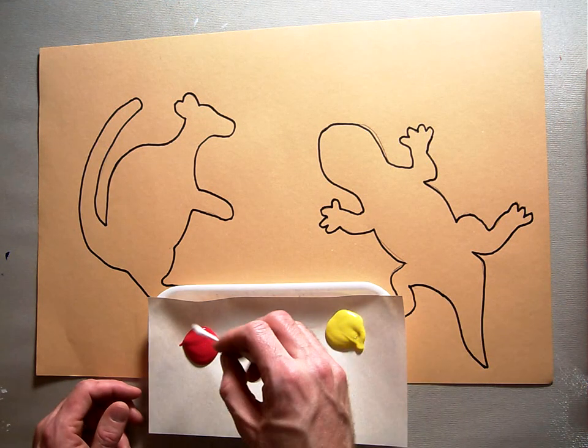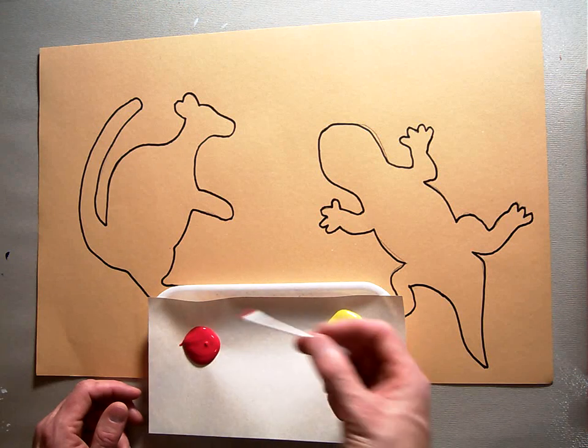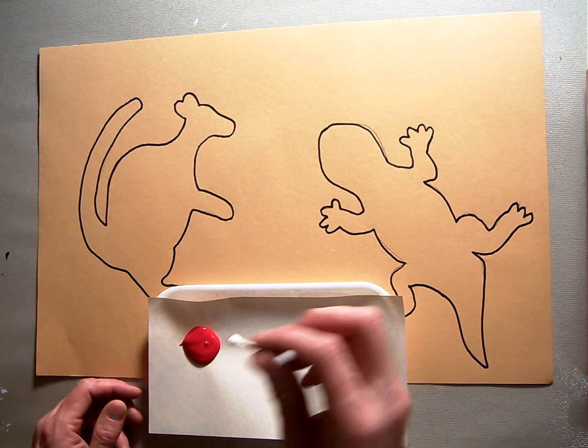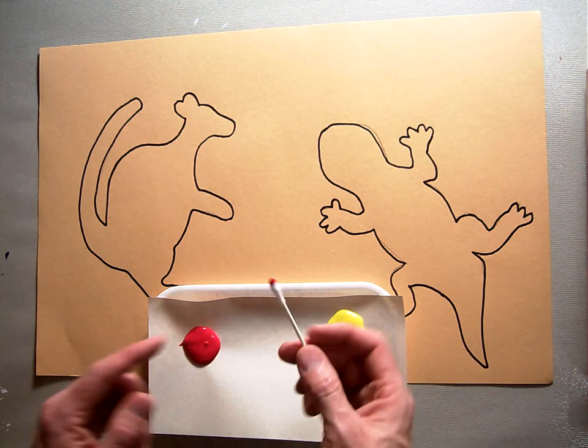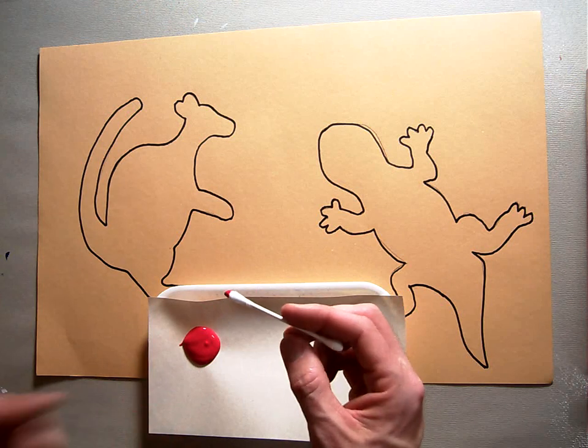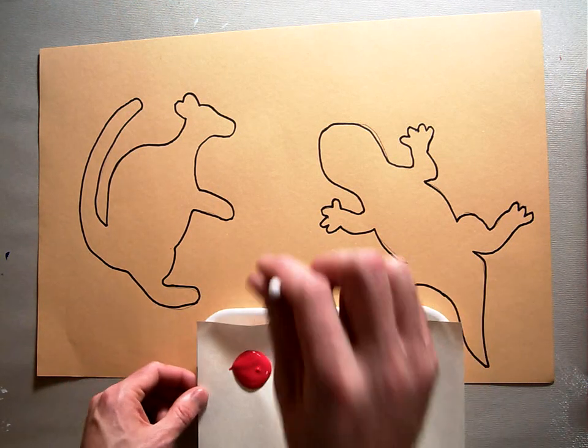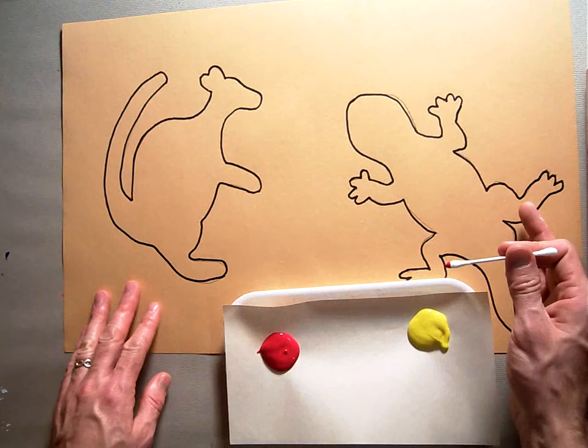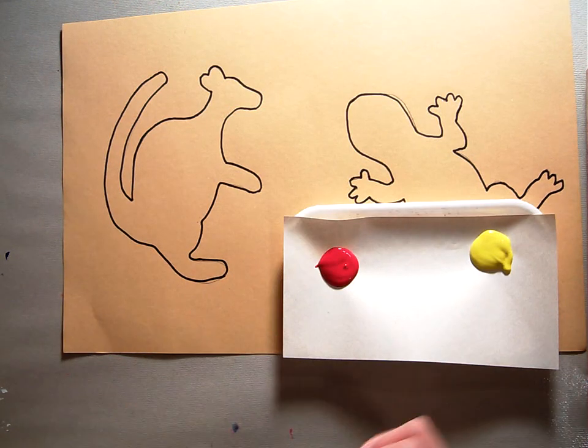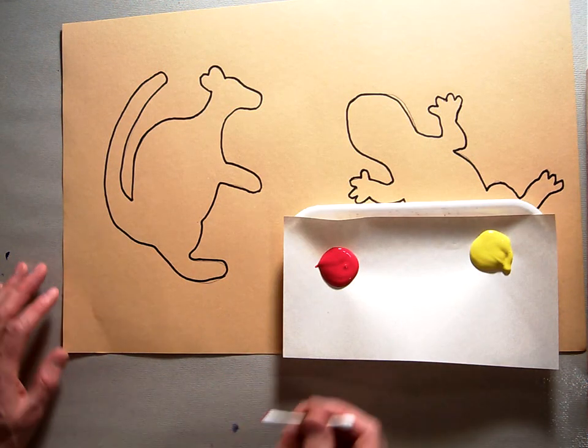You're going to take your Q-tip and dip the tip of it into the paint that you want. Hold it straight up and down because all the squishy stuff is on the top, right? And if you squish it down on the top, you'll get a nice round dot. I'm going to start on my kangaroo.